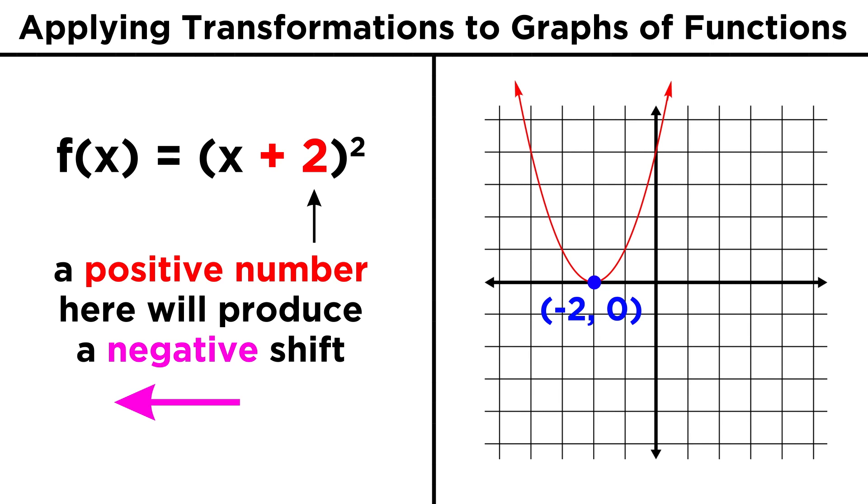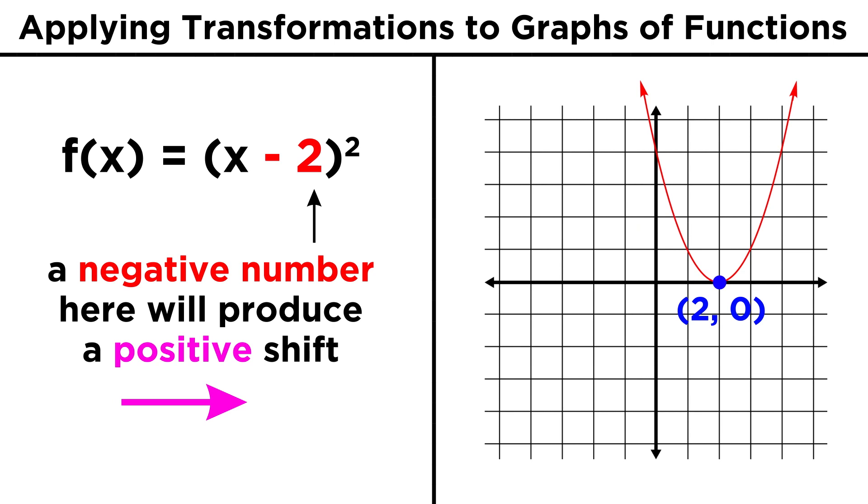This one is a little trickier to remember than the vertical shift, because a positive number here produces a shift in the negative horizontal direction. Likewise, a negative number here, like with x minus two quantity squared, will produce a shift in the positive horizontal direction.